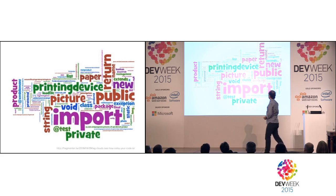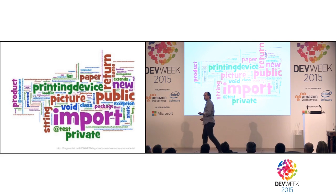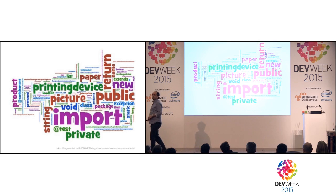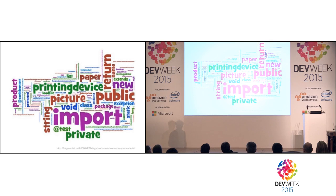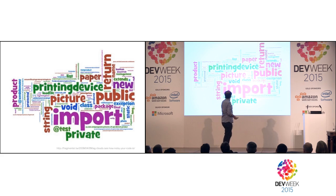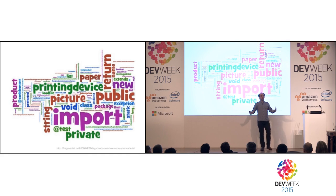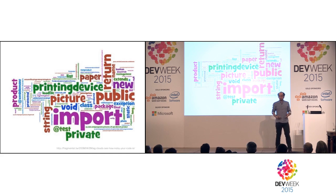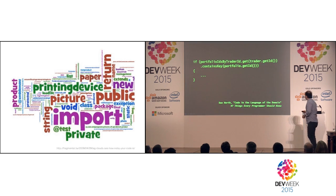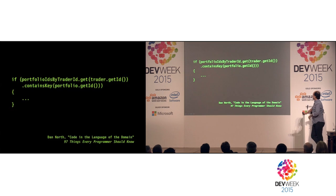A different system's tag cloud shows a much richer vocabulary: printing, device, paper, picture, product. The language of the domain is richly woven into the code. These class names tell you something about the code. In fact, the 'class' keyword itself is larger, meaning there are more types — the code is organized into units that have meaning and are described as such.